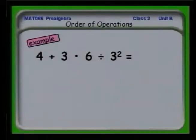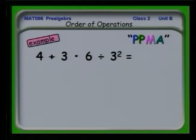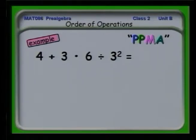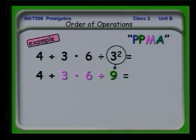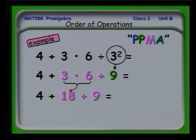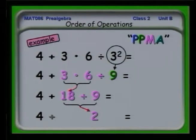Let's look at another problem. The mnemonic I use is PPMA: parentheses, powers, multiplication, division, addition, subtraction. We see there are no parentheses here, so we can skip that. But we do have a power: 3 squared, which I replace with 9. Next I deal with the multiplication 3 times 6, which becomes 18. Then I see a division: 18 divided by 9. Finally, I do the addition and get a result of 6.